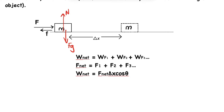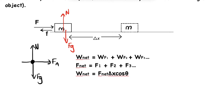To calculate the net work done on an object, you must understand which forces are acting. The free body diagram is of assistance here. We have the normal force, the gravitational force, the force applied, and the frictional force. Those are the forces acting on that object.